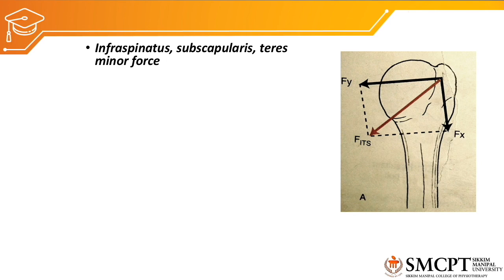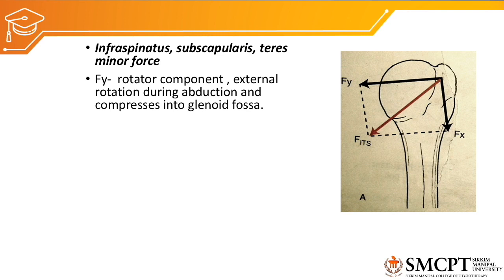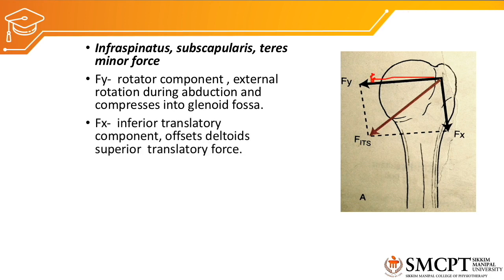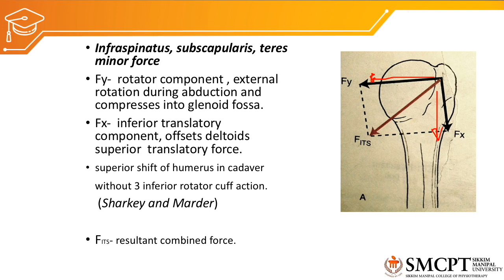The muscles responsible for creating the inferior slide of the humeral head — while supraspinatus and deltoid create the abduction — are infraspinatus, subscapularis, and teres minor. These muscles also create a rotatory and compressive force (Fy). The first force they create is Fx — a downward translatory force pulling the humeral head downward on the glenoid fossa. The resultant force of Fx and Fy is the 'Fits' force — the combined resultant force of infraspinatus, subscapularis, and teres minor.